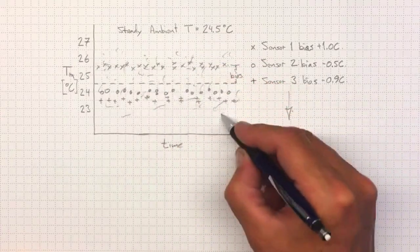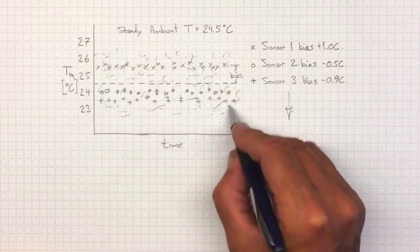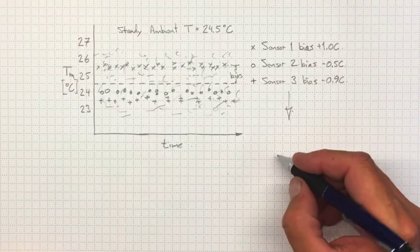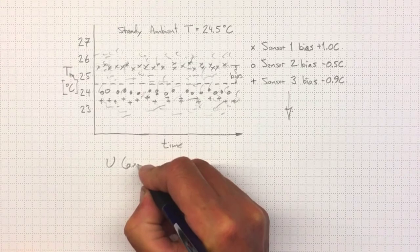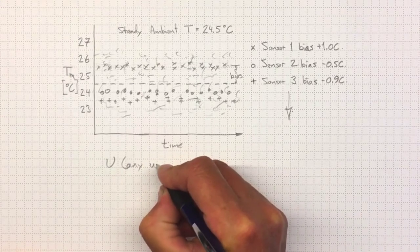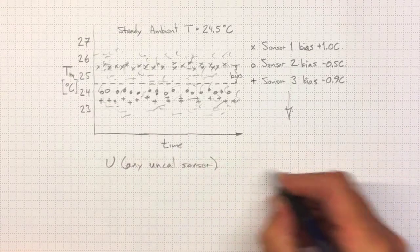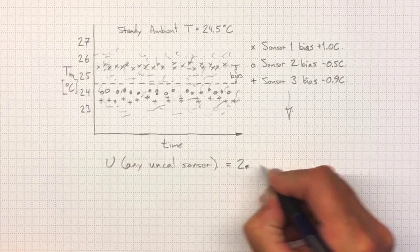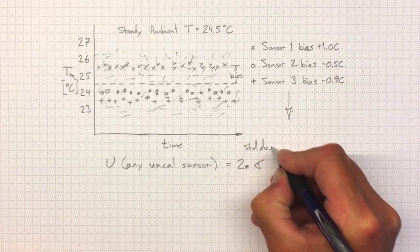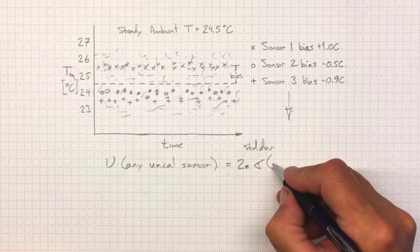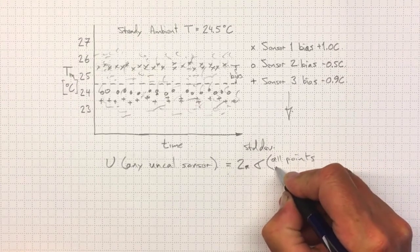And if I wanted to estimate the uncertainty that I'd get by just picking a random sensor, then that uncertainty for any uncalibrated sensor would wind up being equal to two times the standard deviation of all points from many sensors.